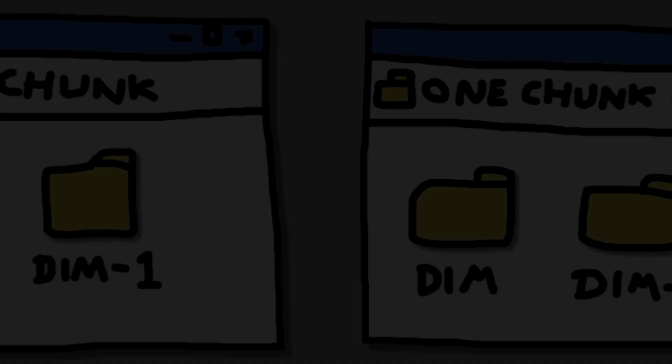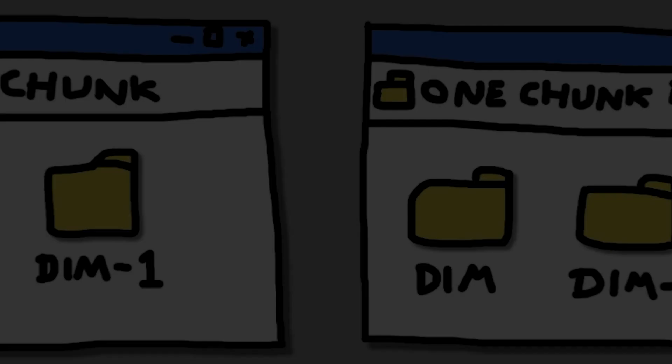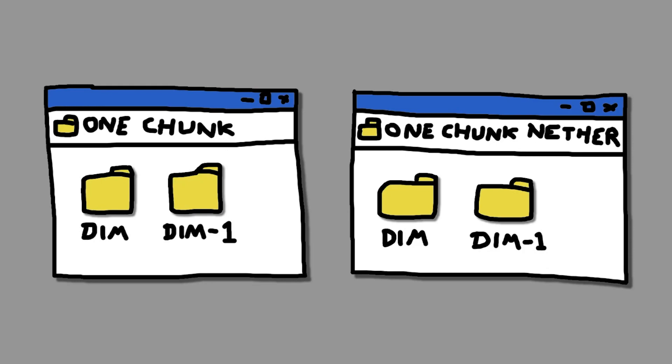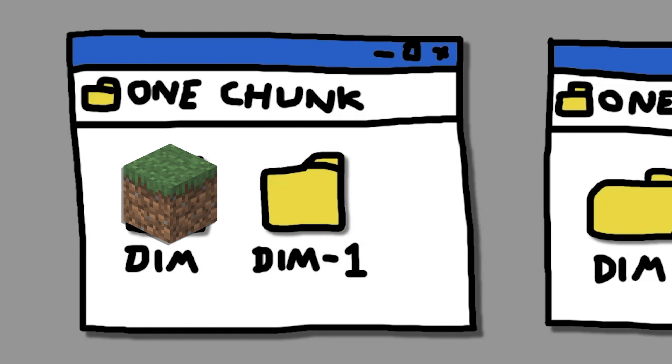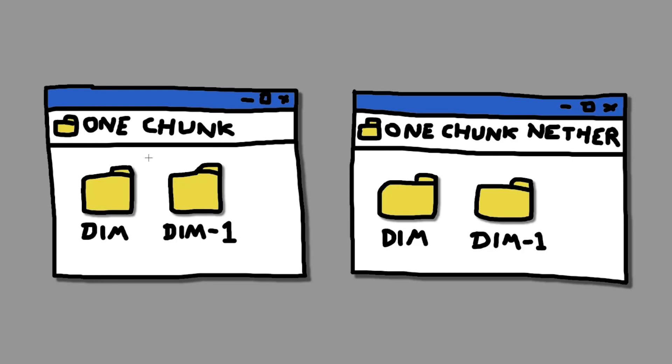The problem is, now we have two worlds: one containing our one chunk overworld, and one containing our one chunk nether. Somehow, we need to combine them. Each world contains a dim folder, which represents the overworld, and a dim1 folder, which represents the nether. So all we need to do is take the dim folder from our one chunk nether world, rename it to dim1, and move it into our one chunk overworld.